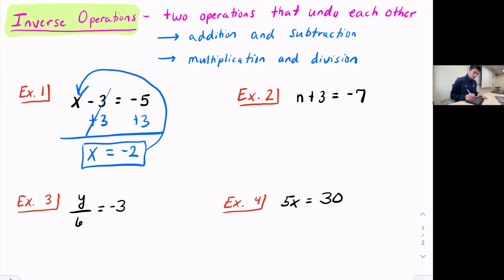All right, example two. What's happening to n? Three is being added to it. So what's the opposite of addition? Subtraction. Whatever we do to one side, we must do to the other. Three and negative three cancel. We get n equals, and we do negative seven minus three, so negative ten.